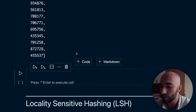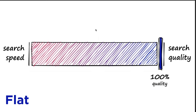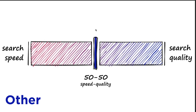We want to go from the flat indexes, which are 100% search quality, to something more balanced — maybe 50-50. But it depends on the use case: sometimes we might want more speed, sometimes higher quality. We'll see a few of those tradeoffs through these indexes.